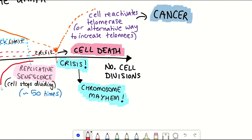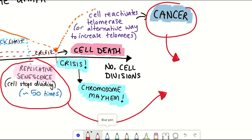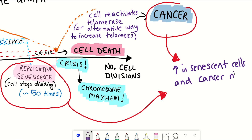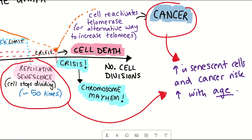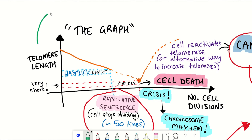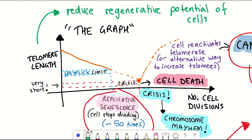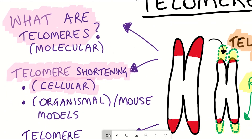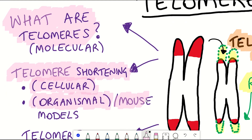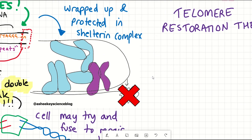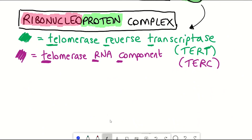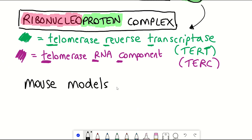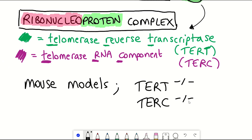So what does this have to do with ageing? The accumulation of senescent cells and the risk of developing cancer both increase with age. Moreover, the reduced ability of cells to replicate due to telomere shortening can reduce regenerative potential and repair of different tissues. This brings us to the organismal level and some mouse studies that support the link between telomere shortening and ageing, using mouse models whereby mice lack telomerase activity.